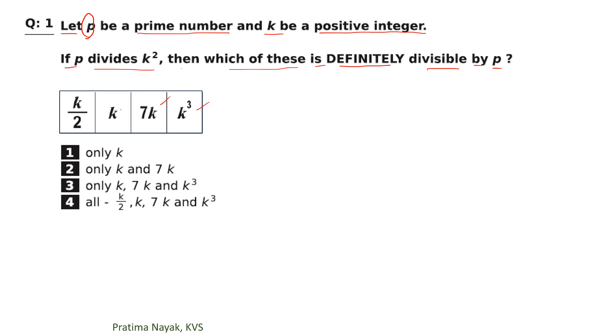Four answers are there. Only K, only K and 7K, only K, 7K and K cube, or all the answers are correct. K by 2, 7K, K cube - all are divisible by P.